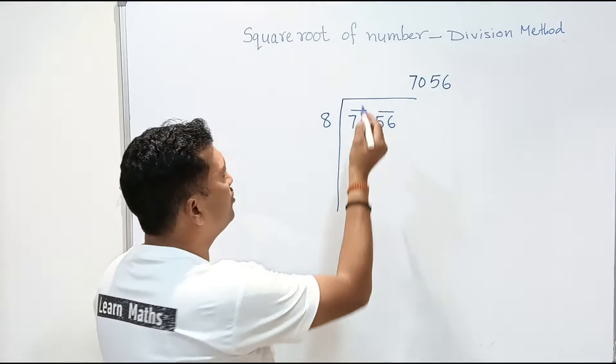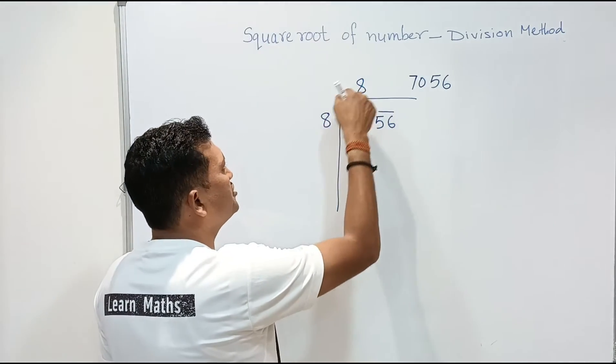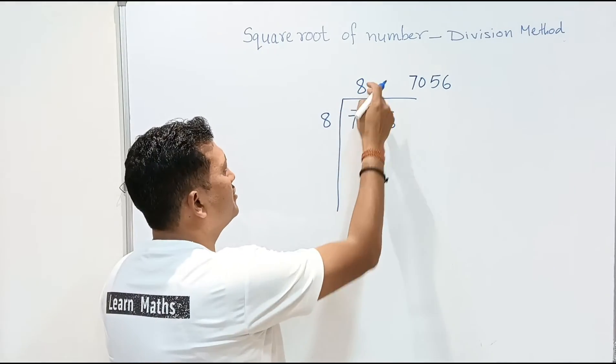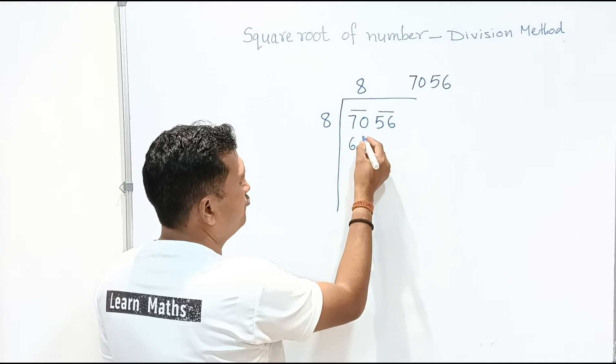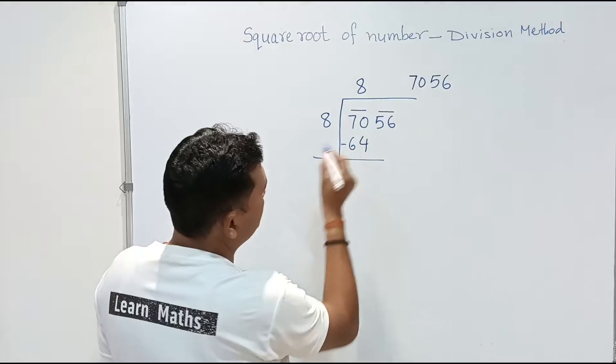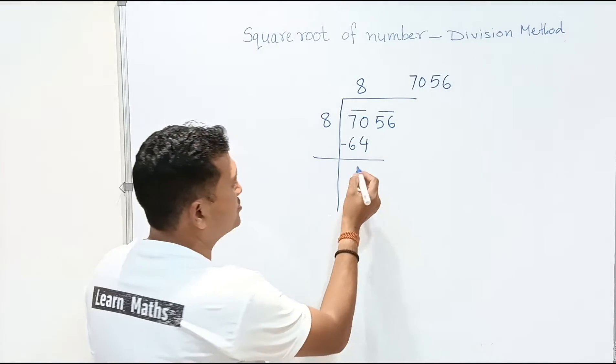And the coefficient also we have to take as 8. This number should always be same. Now 8, 8's are 64. We need to write here 64. Then we'll draw one horizontal line over here. We'll subtract 70 minus 64 is 6.